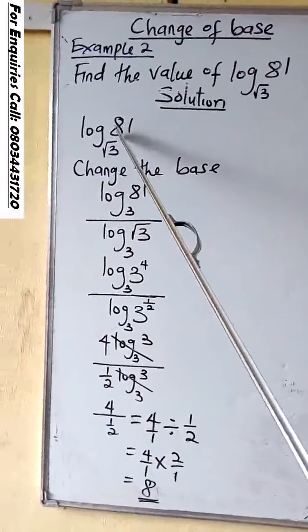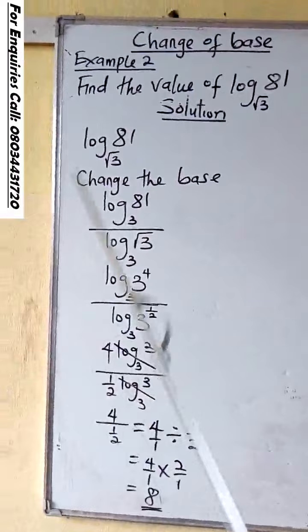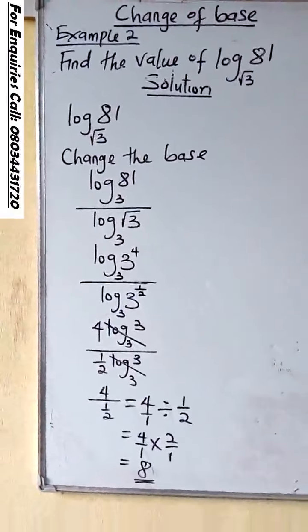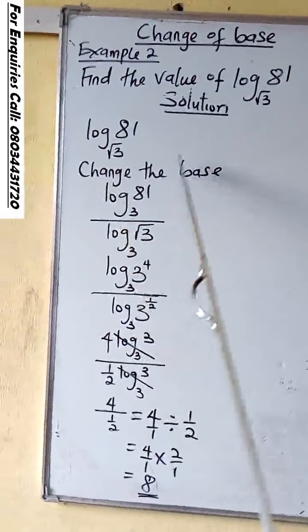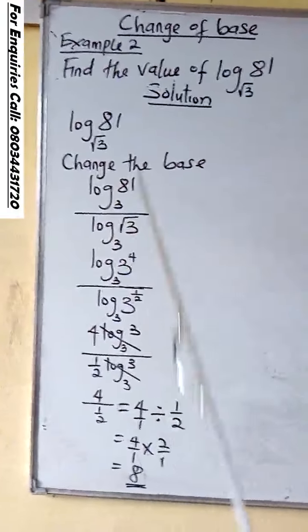So our initial logarithm there is 81. Our initial base is √3. So if the base is changed, I will have what?